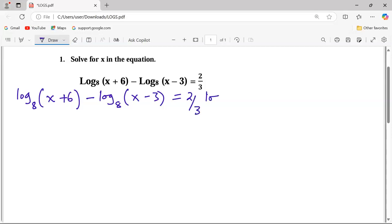But now at this point I will introduce the logarithm of 8 to base 8. Since we know that the logarithm of a number to the same base is equivalent to 1, and by introducing logarithm of 8 to base 8 on the right hand side, the value of 2 thirds is not affected.